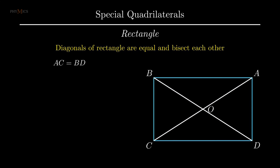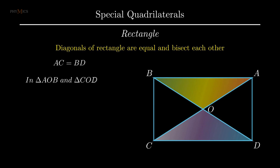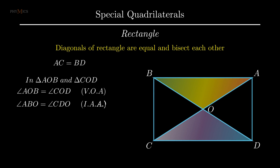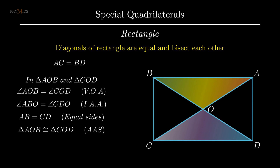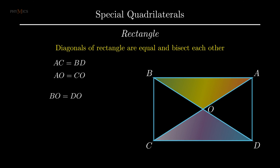Now to prove diagonal AC and diagonal BD bisect each other, consider O as the intersecting point, resulting in the formation of triangle AOB and triangle COD. As vertically opposite angles are equal, angle AOB equals angle COD. Since opposite sides of the rectangle are parallel, that is side AB parallel to side CD, interior alternate angles are equal, thus angle ABO equals angle CDO. Side AB equals side CD as opposite sides of a rectangle are equal. Therefore by angle-angle-side rule, triangle AOB is congruent to triangle COD. By corresponding parts of congruent triangles, segment AO equals segment OC and segment BO equals segment OD. Hence diagonals of a rectangle are equal and bisect each other.